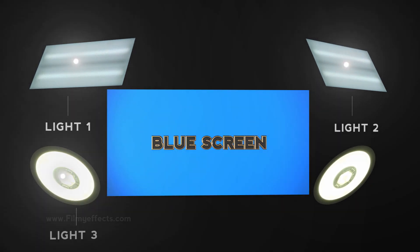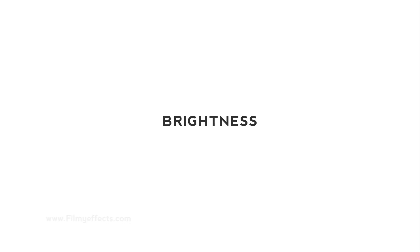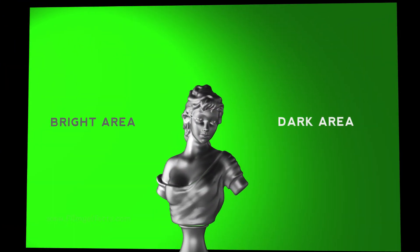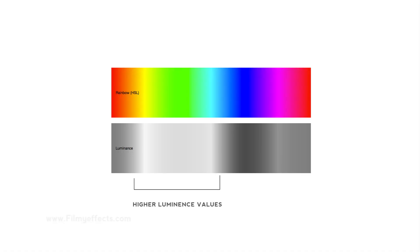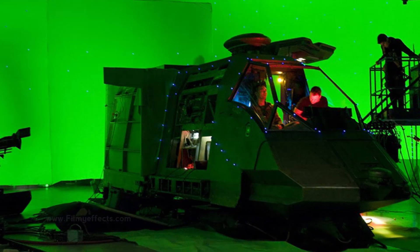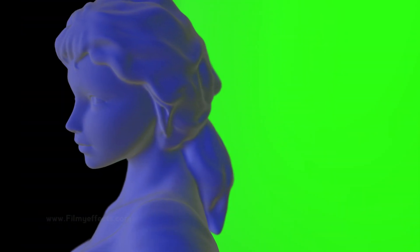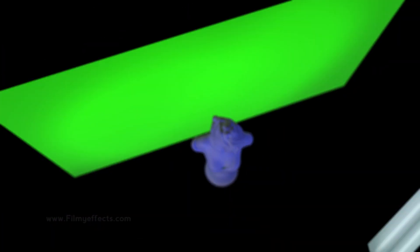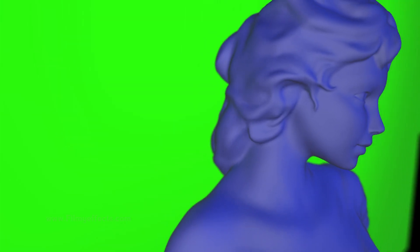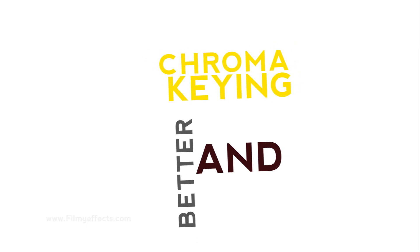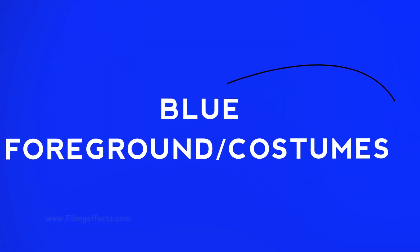First, we will create two lights and use the chroma key. We separate the background so that the luminance of the green screen provides brightness. However, this causes reflections on the foreground — the face and edges appear green. To solve this chroma spill problem, we can correct it through color grading.